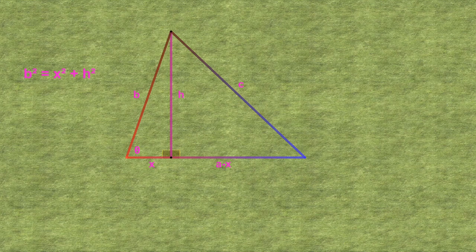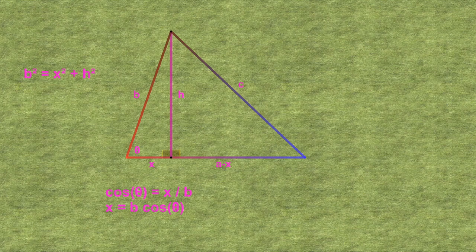Recall that the definition of the cosine function in angle theta is quite simply x over the radius, or in this case x over b. We can rearrange and write the unknown x equals the known b cosine theta. So, now we have two pieces of information.